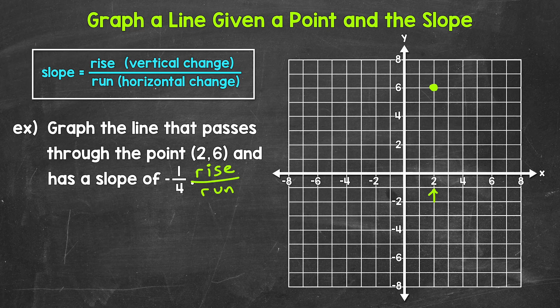Now here, since we're working with a negative, we're going to either put the negative in the numerator, so with the 1, or in the denominator with the 4. So writing this out, our slope is negative 1/4.